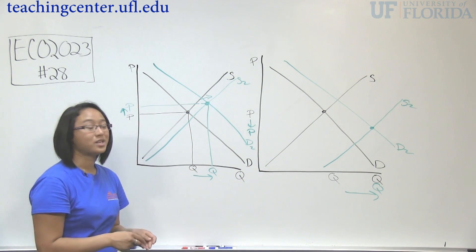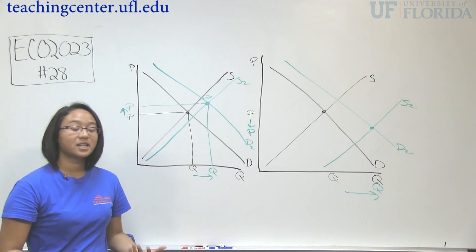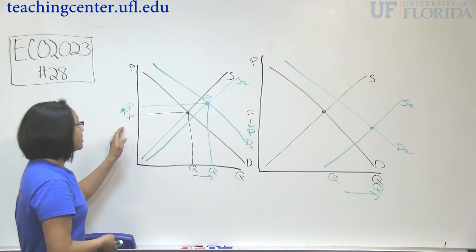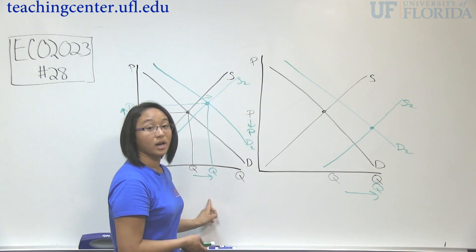If they tell you that supply increases only a little bit, then you draw a small change. Here they didn't tell you, so the answer is ambiguous. We don't know. We need to know more information about price, but we know definitely that quantity increases.